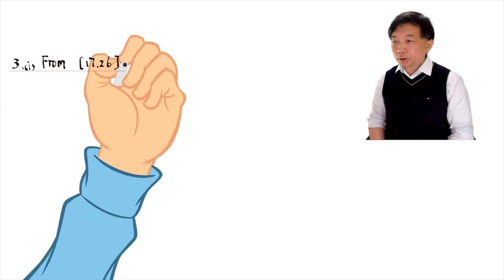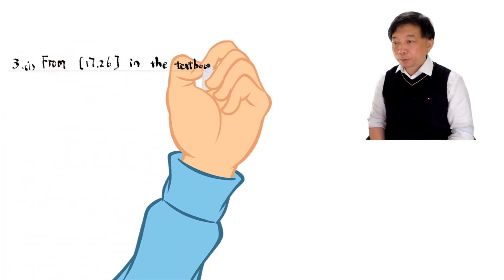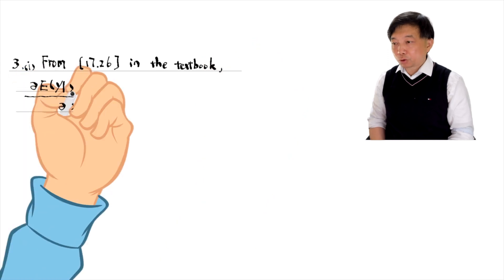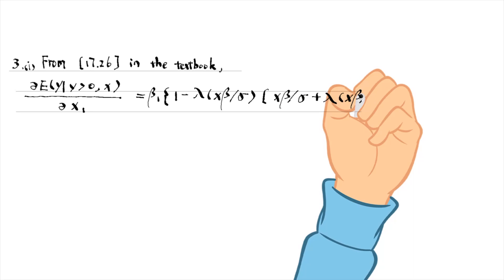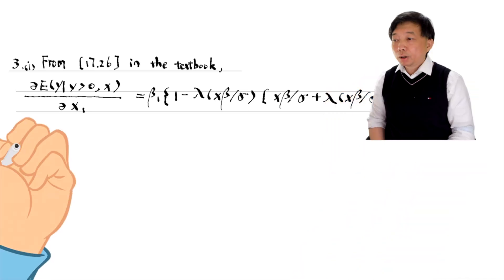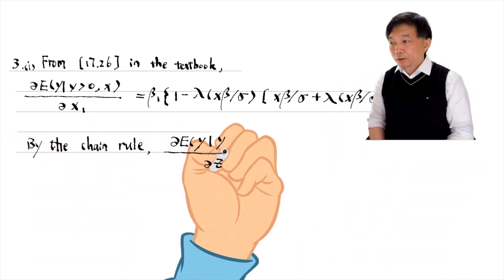From equation 17.26 in the textbook, we have the expression for the partial effect of x₁. Using the chain rule, we can reach the answer.